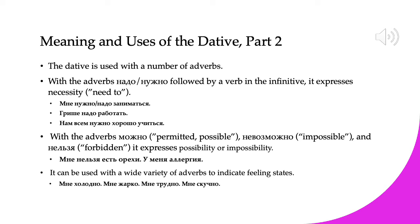We can also use the dative with the adverbs можно, meaning 'permitted or possible,' невозможно, 'impossible,' and нельзя, 'forbidden,' in order to express possibility or impossibility. For example, мне нельзя есть орехи, у меня аллергия — I can't eat nuts, I have an allergy. The person for whom something is impossible, possible, or forbidden is in the dative, and if we have a verb, it's in the infinitive.